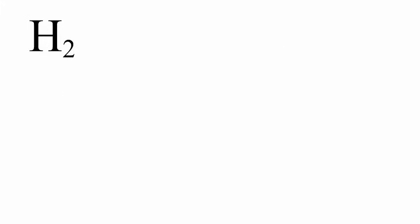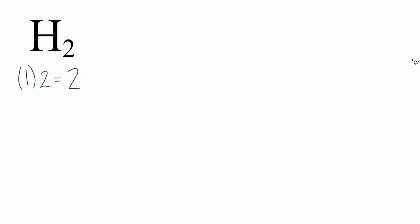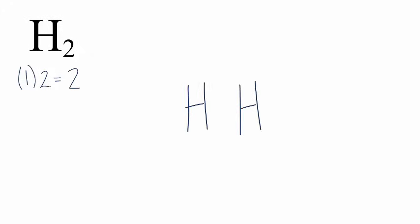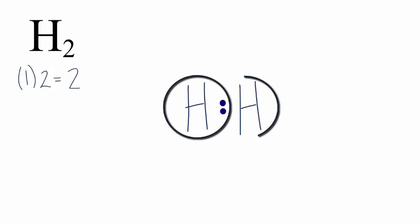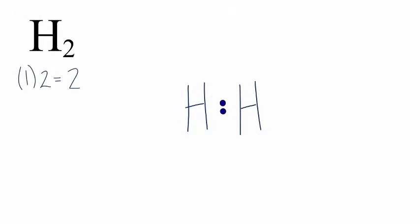H2 is probably the simplest Lewis structure we can draw. If we count the valence electrons, hydrogen is in group one and has one valence electron, but we have two hydrogens. We multiply those together: 1 times 2 is 2, so we have a total of two valence electrons. We'll put our two hydrogen atoms next to each other, then move two valence electrons between them to form a chemical bond. We've used both valence electrons. Hydrogen is an exception — it only needs two — and that's the Lewis structure for H2, hydrogen gas.